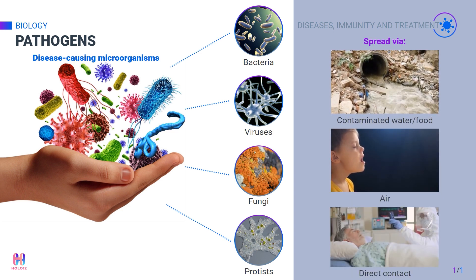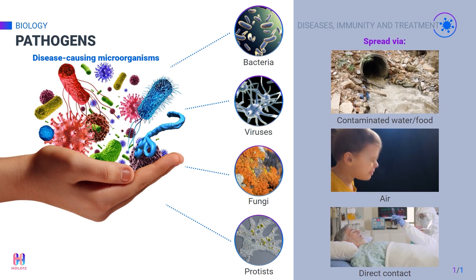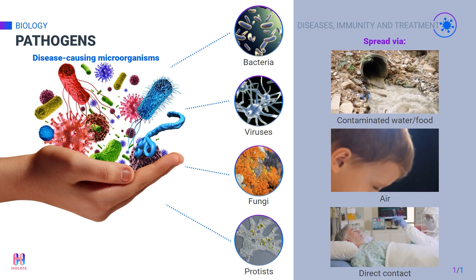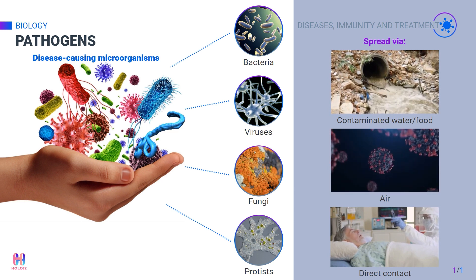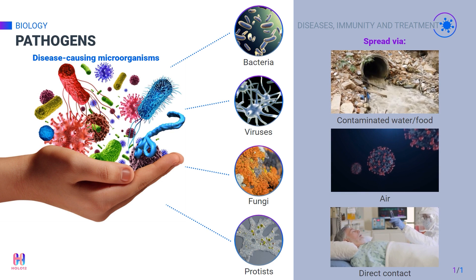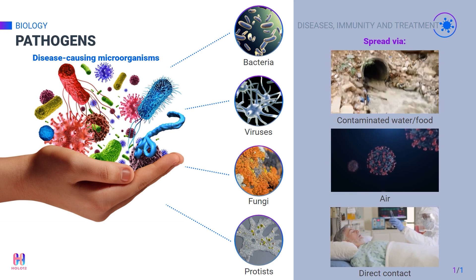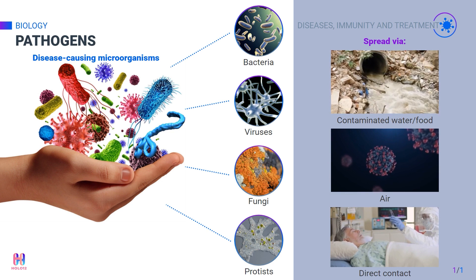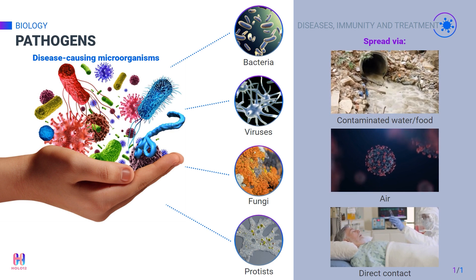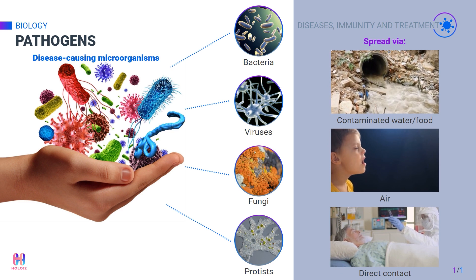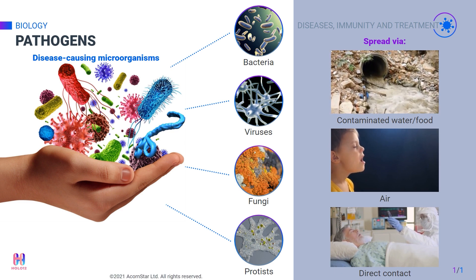Pathogens can infect us when we consume contaminated water or food, or when we breathe them in from coughs and sneezes from infected people. They can also infect us by direct contact with a person who has the disease, through their bodily fluids, such as blood or mucus.